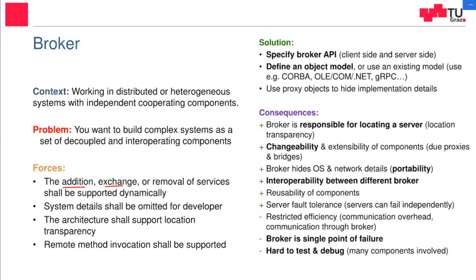Location transparency shall be supported — it shouldn't matter where the broker or server is located; it should still work. Remote method invocation shall be supported: we shouldn't be limited by the number of parameters we can send, and we should be flexible to send any kind of request. The solution is to specify a broker API — how we call the broker, define an object model, how we send data, how we pack it into messages. Nowadays, brokers use MQTT or some other messaging system for this, and proxies hide all implementation details.